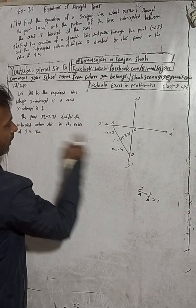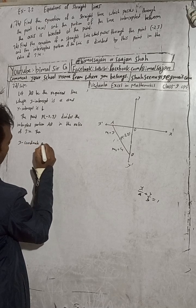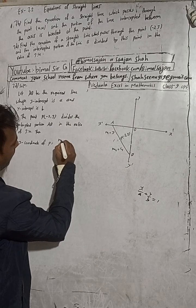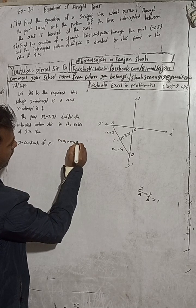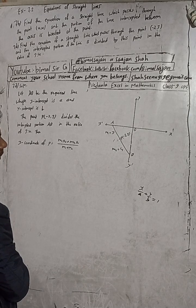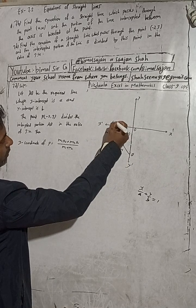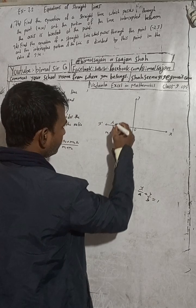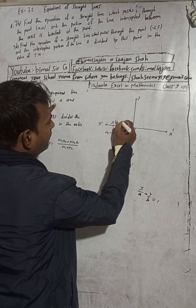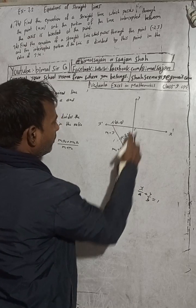Now, the x-coordinate of point P: using the section formula, x-coordinate equals m1 times x2 plus m2 times x1, divided by m1 plus m2. Here, x2 is the value at point B which is 0, and x1 is the value at point A which is a.